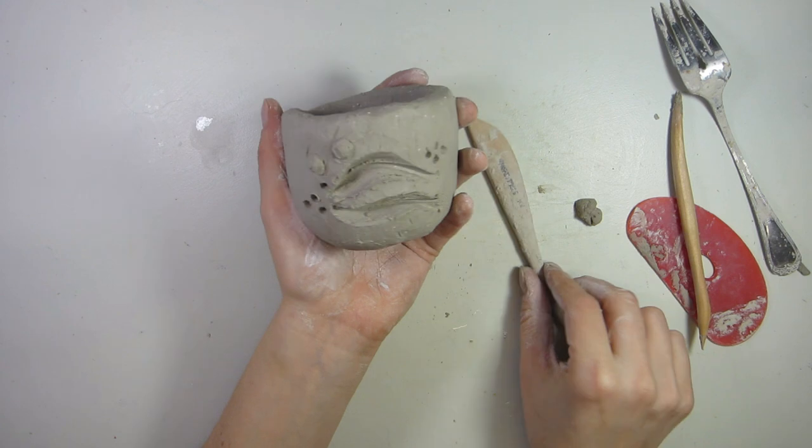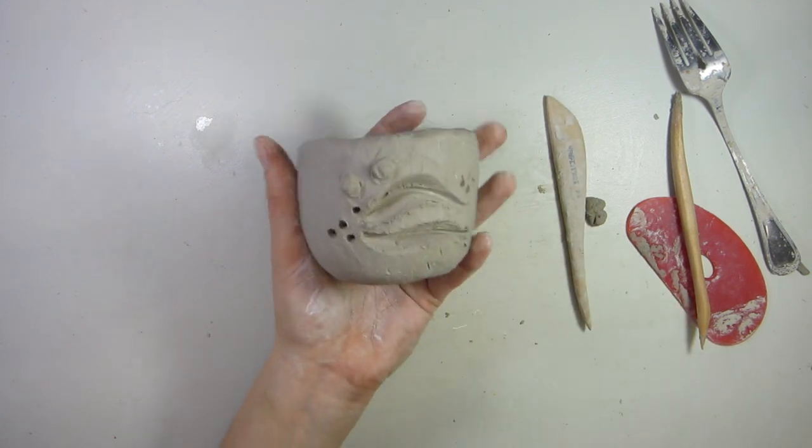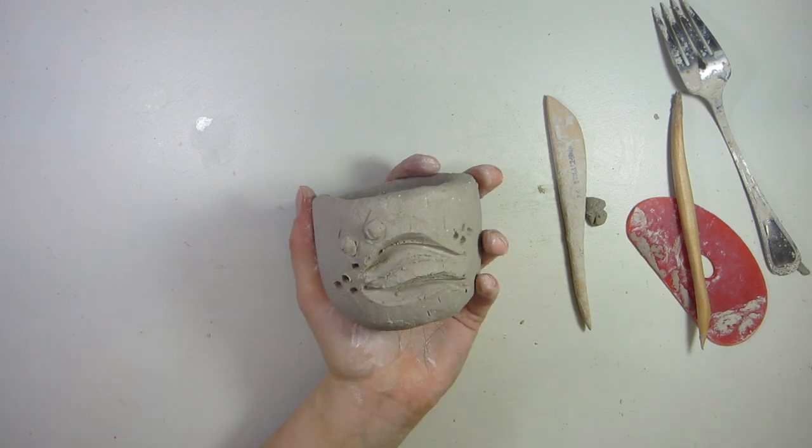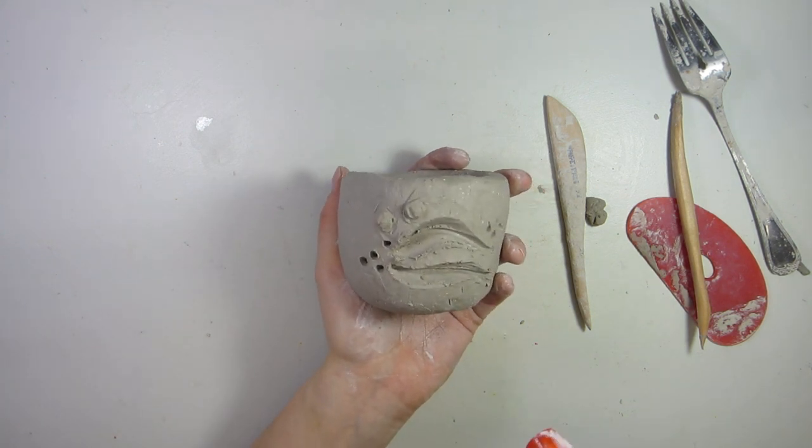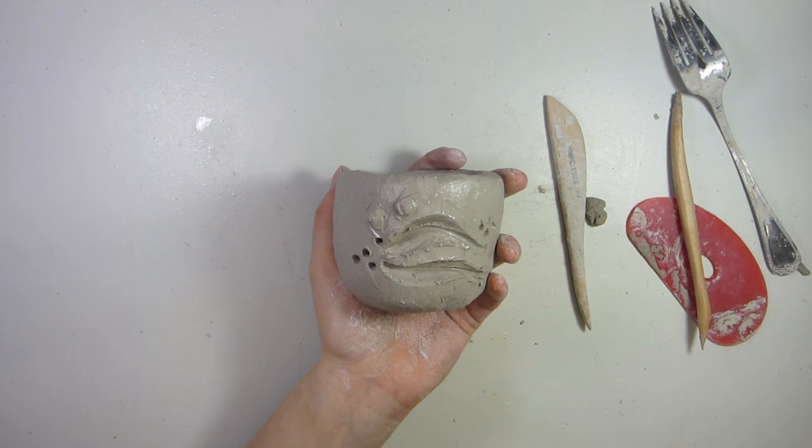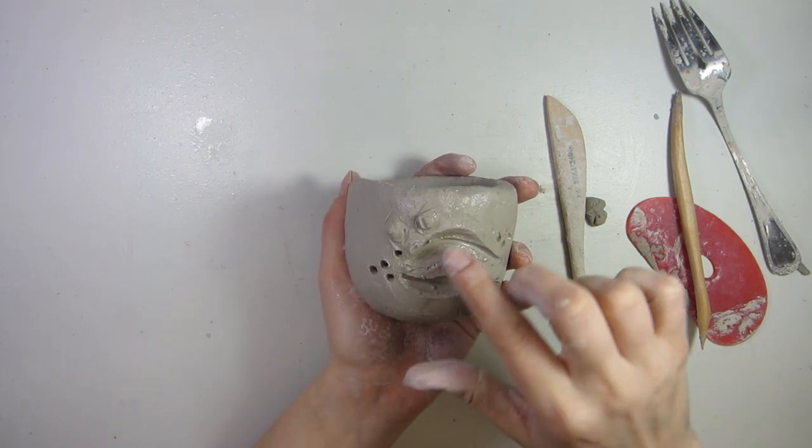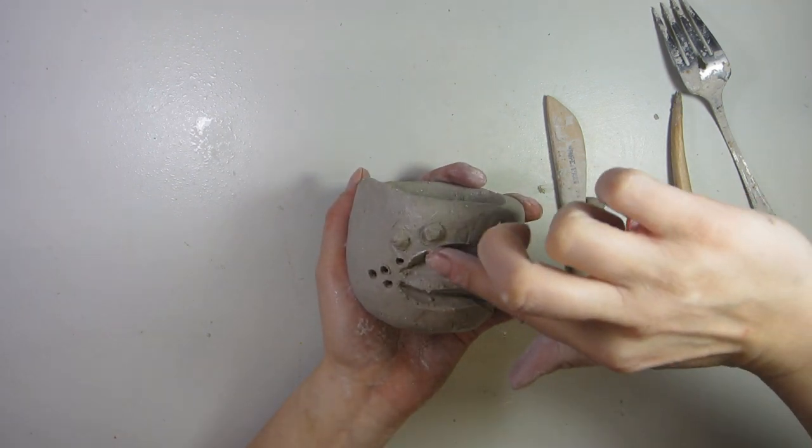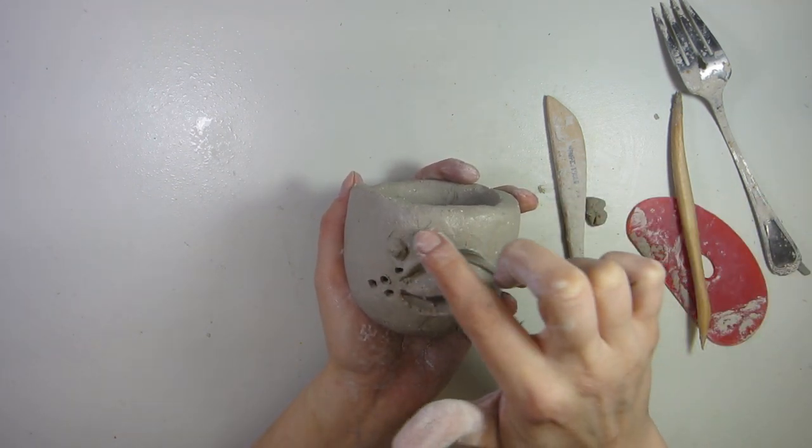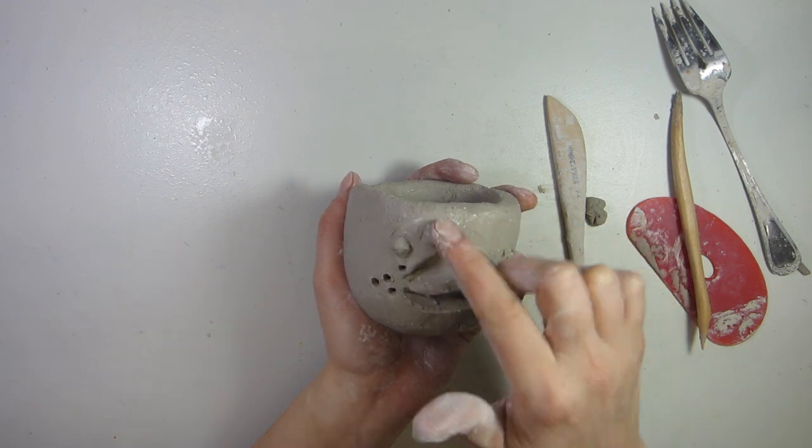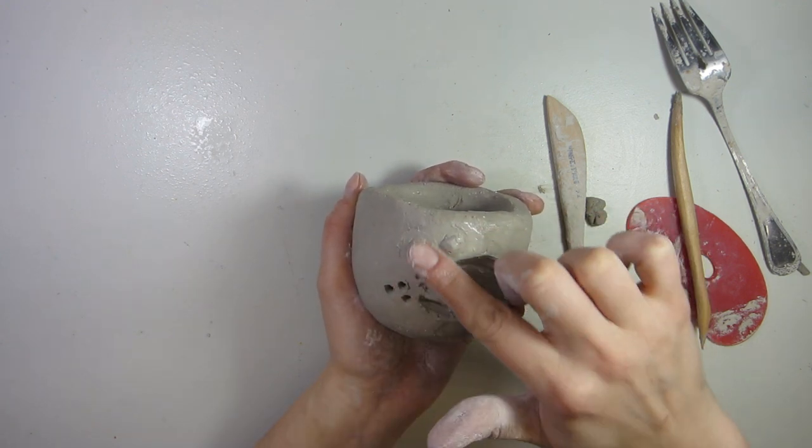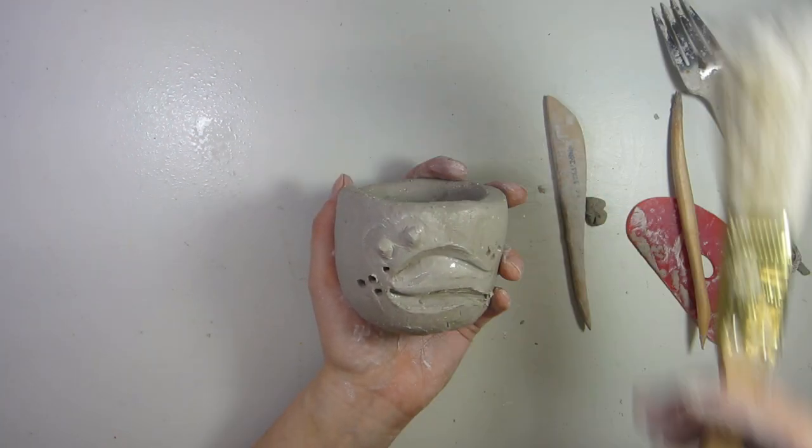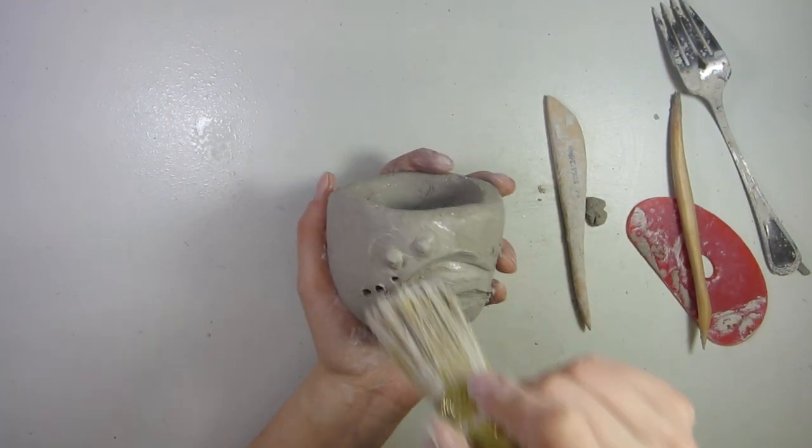And again, you might be thinking, well, now it must be time to sponge this to make it perfect to get rid of all those boogers. The answer is no. Use your spray bottle. Never use your sponge unless you really feel like it's necessary. You can use your spray bottle and finger and smooth out some of that. You could also use your spray bottle and a paintbrush.